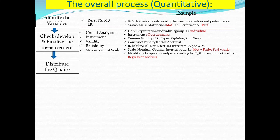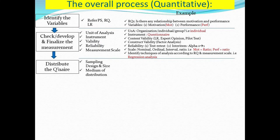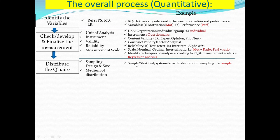We go to the third stage, where we start distributing the questionnaire. Before we really distribute, there are two issues to settle: first is sampling design and size, and second is the medium of distribution. For sampling design, there are several options: simple random sampling, stratified, systematic, and cluster random sampling. We have to choose the best one that suits the nature of our research and research question. For example, let's say we are choosing simple random sampling.